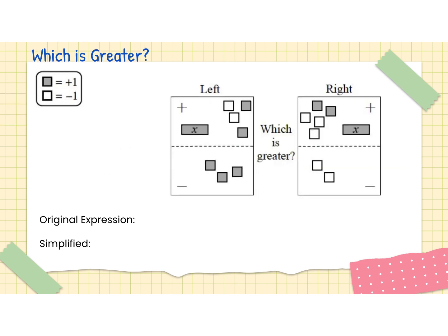Go ahead and pause this video and see if you can figure out which side is greater — left or right — then come back. The first thing we want to do is write down our two original expressions. On the left-hand mat, we have x plus 2 minus 2, and then in the negative region, we have 3. On our right-hand mat, we have x plus 2 minus 3, and then in our negative region, we have negative 2.